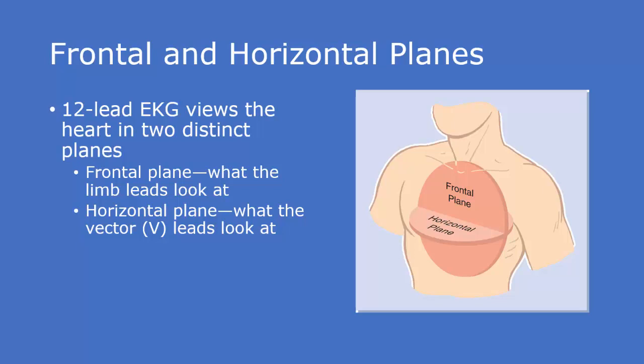As far as what is the different angles or what makes a 12 lead unique in the fact that we are looking differently and we've got a few more leads: a 12 lead EKG views the heart in two distinct planes. You've got your frontal plane, which is what the limb leads look at—that's leads 1, 2, 3, AVR, AVL, and AVF. We've learned that before. Combined together, leads 1, 2, 3, and your augmented leads, they form what's called the hexaxial reference system. The frontal plane, think of the frontal plane as being up and down. Example lead 2, you would be measuring from right shoulder to the left leg where your positive lead is. Your horizontal plane is what the vector leads or the V1, V2, V3, V4, V5, and V6 look at.